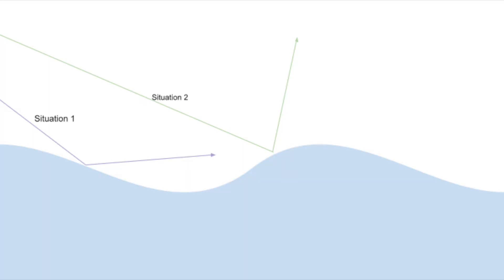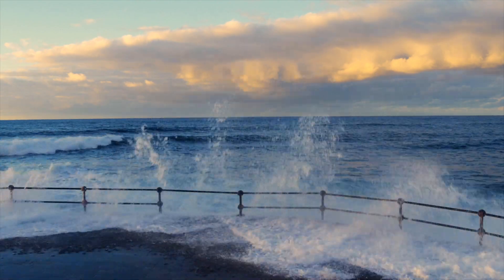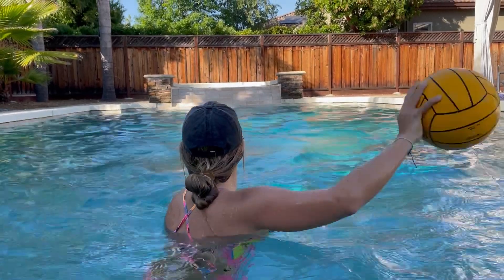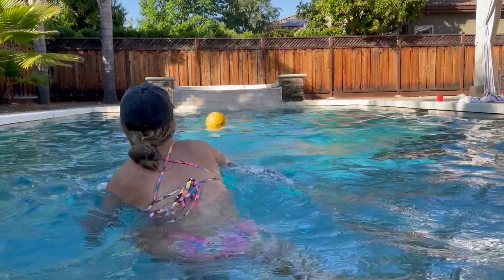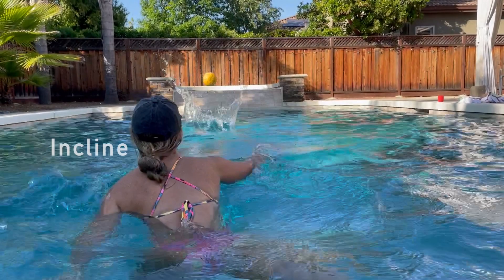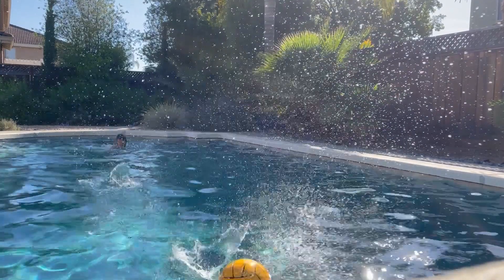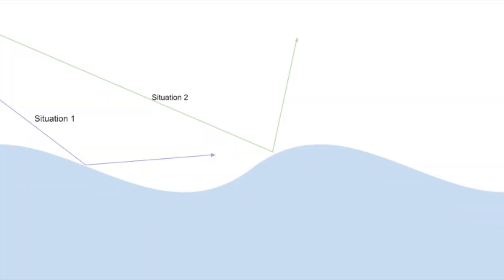Another factor to take into consideration is the water surface. Water is almost never completely still, so when skipping a ball, it could impact the surface on an incline or decline. This diagram shows the possible outcomes of each situation and how this would affect the angle at which the ball bounces back up into the air.